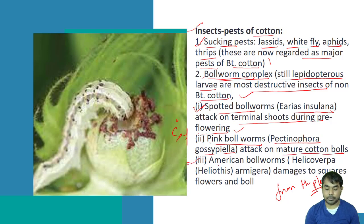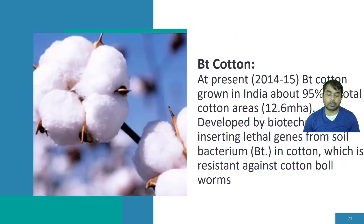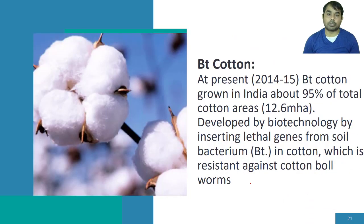The third is the American boll worm, whose scientific name is Helicoverpa armigera — also called Helicoverpa. This will damage the square, flower, and boll. So those were the insect pests of cotton. Now we will discuss BT cotton.